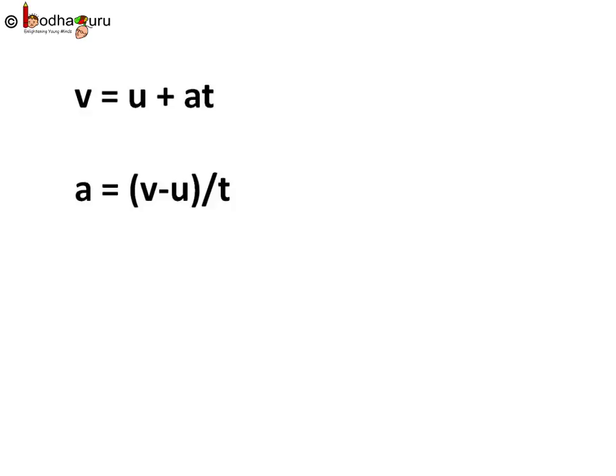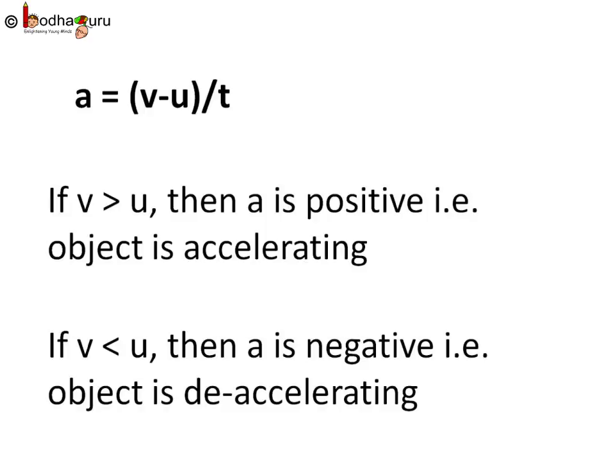Change of velocity is meter per second divided by time which is also second. So meter per second square. So acceleration a is equal to change in velocity v minus u divided by time t.